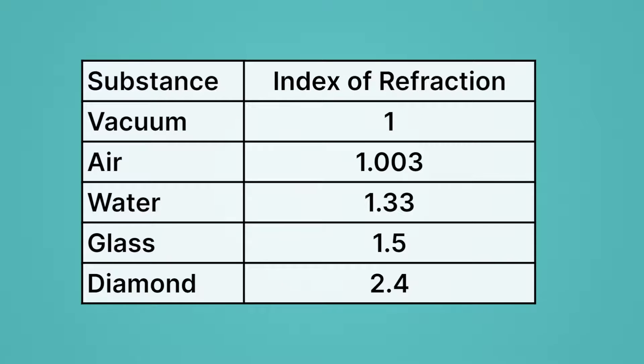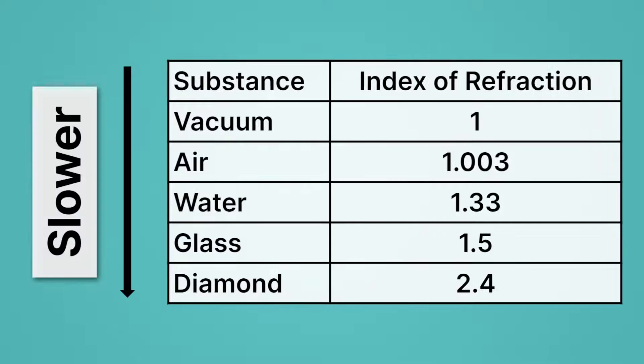We have a fancy index that measures how much light slows down. We call it the index of refraction. And it's just a measure of how much light slows down in a given material. Here are a bunch of different indices of refraction. In vacuum, you'll notice it's 1, and that's because it doesn't slow down at all. In air, it's 1.003. That means it slows down just a little bit. Water, it slows it down a bit more, 1.33. Diamond slows it down a lot. So as we go down this list, we know that light would travel through these substances slower.